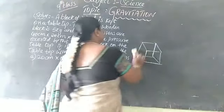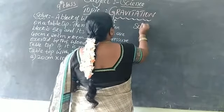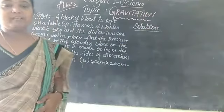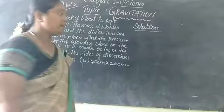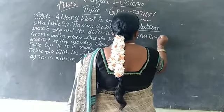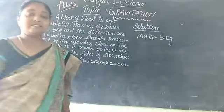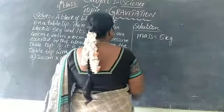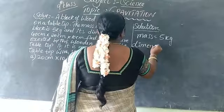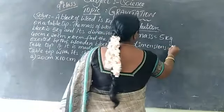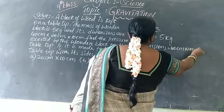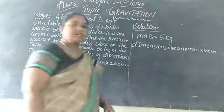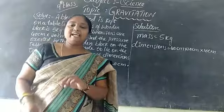Let's start. So first, what is given? Let me write down. The mass of the wooden plank is 5 kg. And the dimensions are 40 cm into 20 cm into 10 cm.